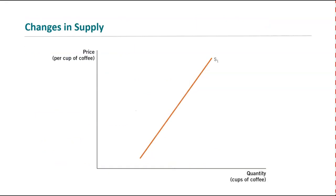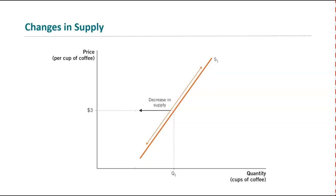Here's an example of a supply curve. It is upward sloping, which indicates the law of supply — the direct relationship between price and quantity supplied. The higher the price, the higher the quantity supplied. Let's say the price of a cup of coffee is $3 and the quantity supplied is Q1. What could cause a decrease in supply? What would change your mind about how many cups of coffee you're willing or able to sell at $3, without the price itself changing?